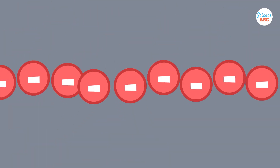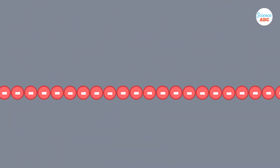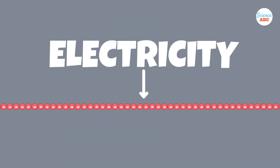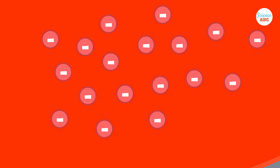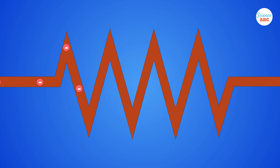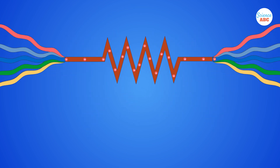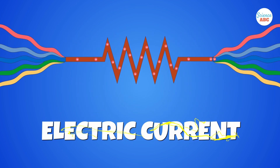The movement of electrons is generally referred to as electricity. In the previous example, we saw how electrons can accumulate on the balloon's surface. When electrons steadily flow through a material, however, it is called an electric current.